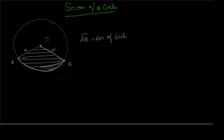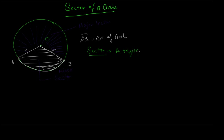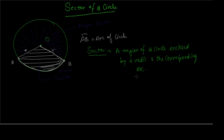There are two kinds of sectors: a major sector and a minor sector. The major sector is the one with a larger area, and the minor sector encompasses a smaller area. To define a sector properly: a sector is a region of a circle enclosed by two radii and the corresponding arc.